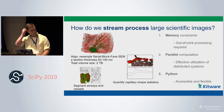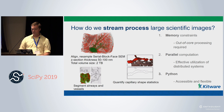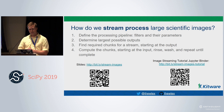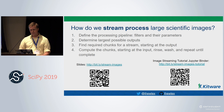Coming back to our original problem — how do we process these large scientific images without using up all our memory, doing things in parallel, doing things in Python — this is the approach we can use. To recap: define your processing pipeline with filters and parameters, determine the possible outputs, find the required chunks starting from the output and moving back into the stream, then sequentially process the streams. Slides are available via the link, and there's a tutorial for getting started with streaming in a Jupyter notebook.